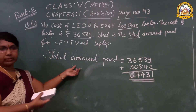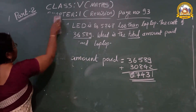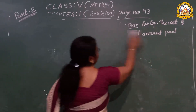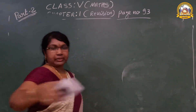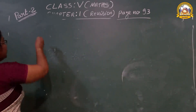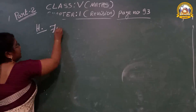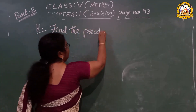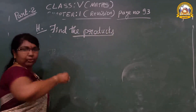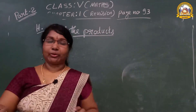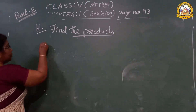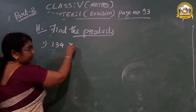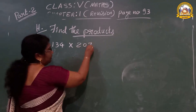Now we are going to write the next questions. Look here — question number H. The question says 'find the products.' What do you mean by products? Products means multiplication. I will show you one question: 134 multiplied by 207. In last year's fourth class, you studied one-digit, two-digit, and three-digit multiplication.